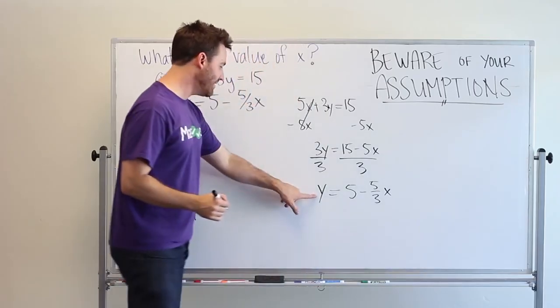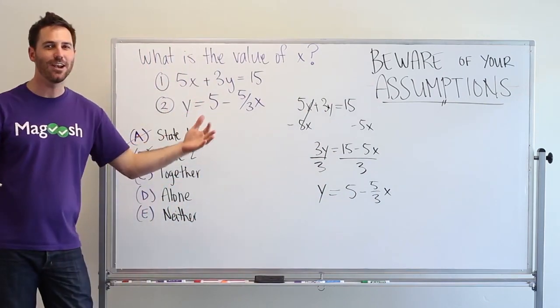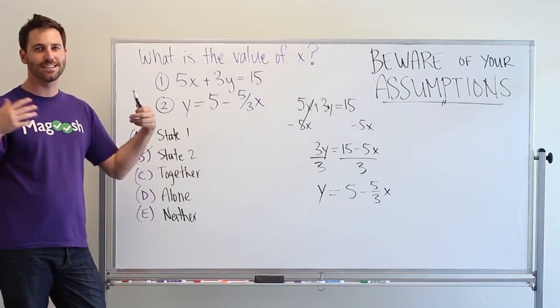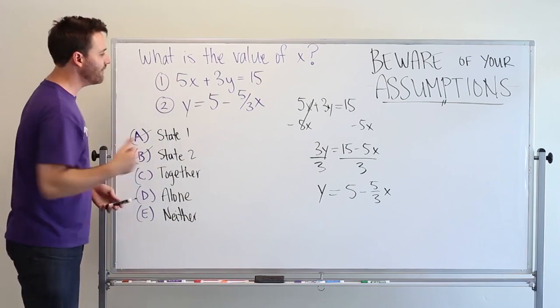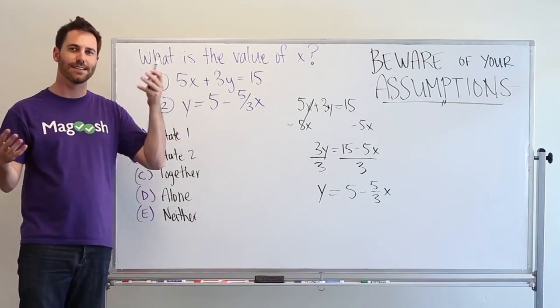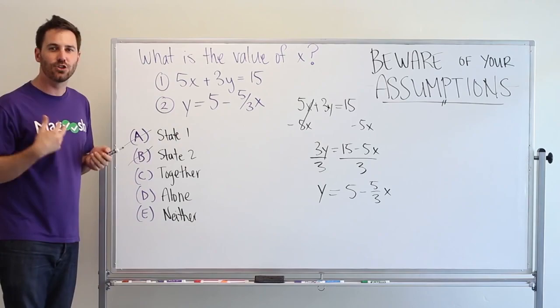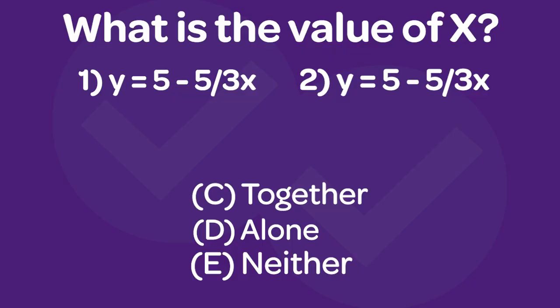Look, this is the same as this. So now I know that they're giving us just the same information in two different statements. It just looks different but it's actually the same thing. So you're not actually getting two different linear equations. You have the same one just written differently.